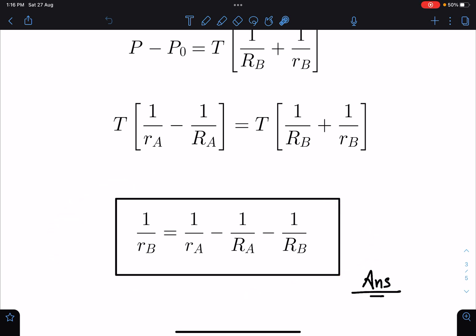We get the required relation of r_B. If we further solve, we can get the value of r_B. So it is 1/r_B = 1/r_A - 1/R_A - 1/R_B. This is going to be the final answer for this problem.